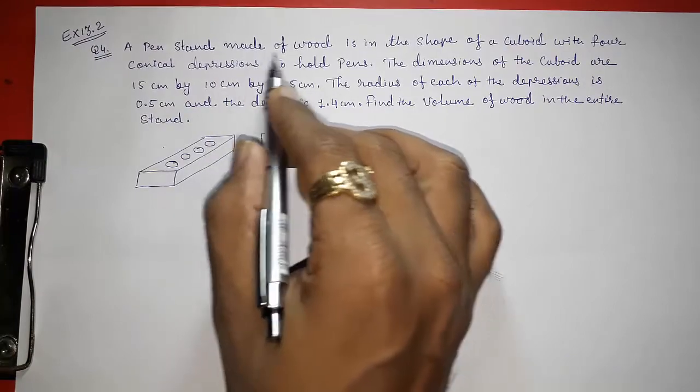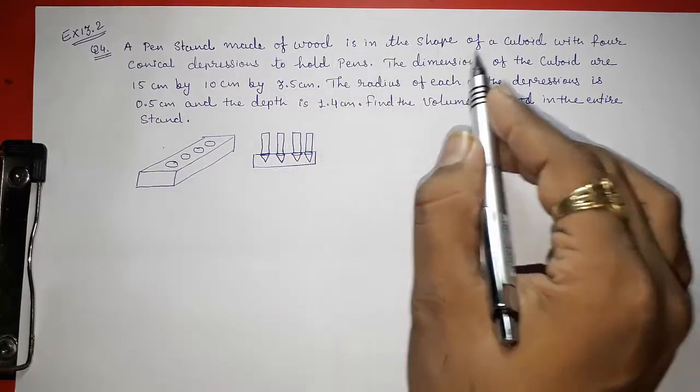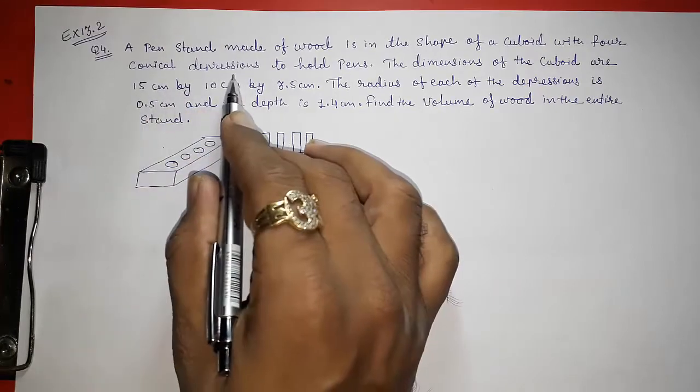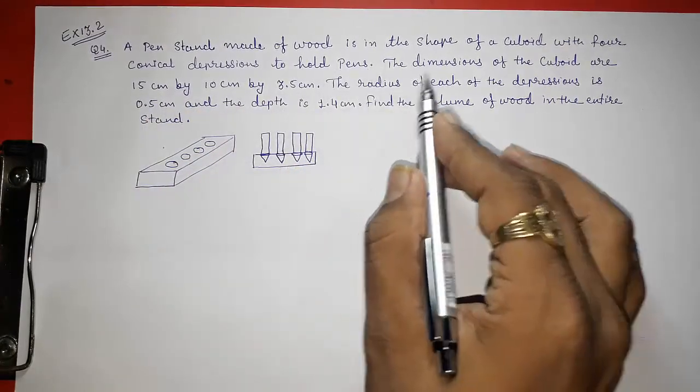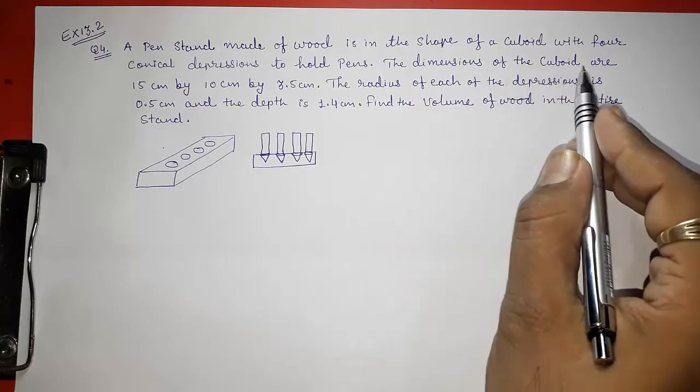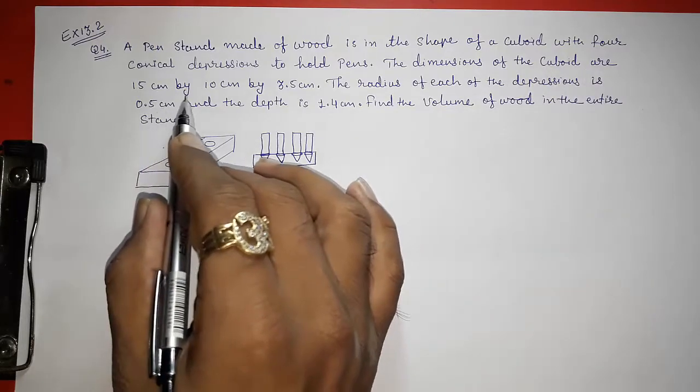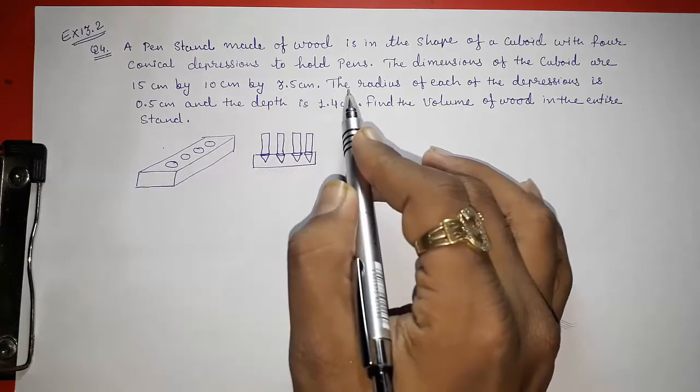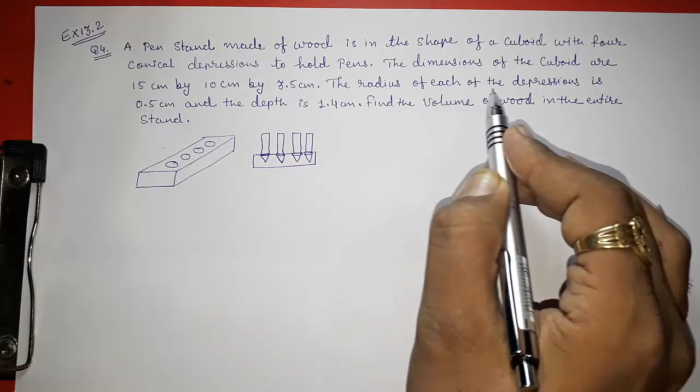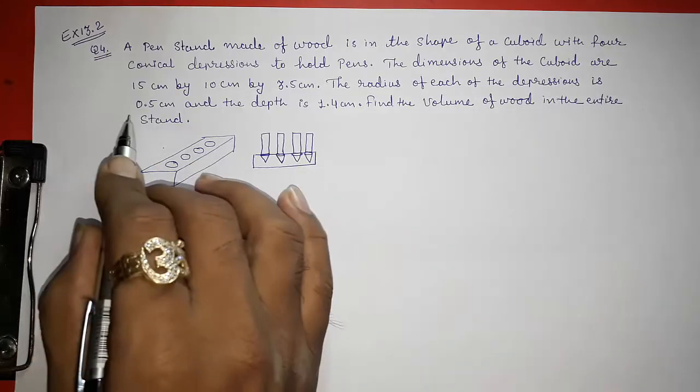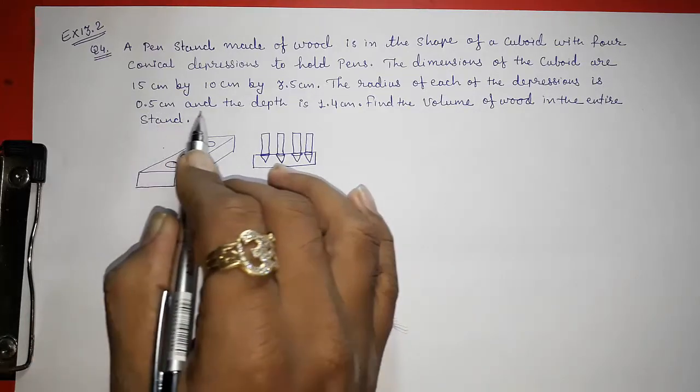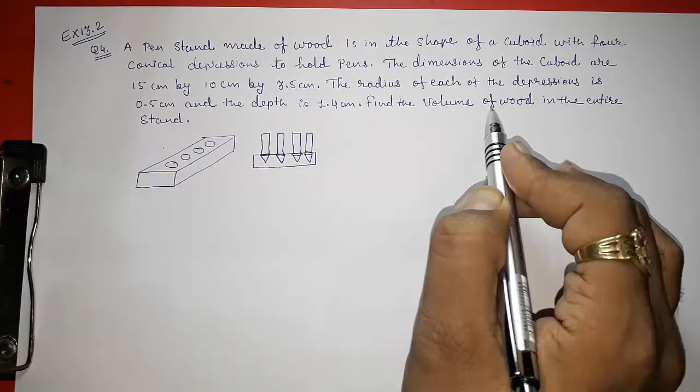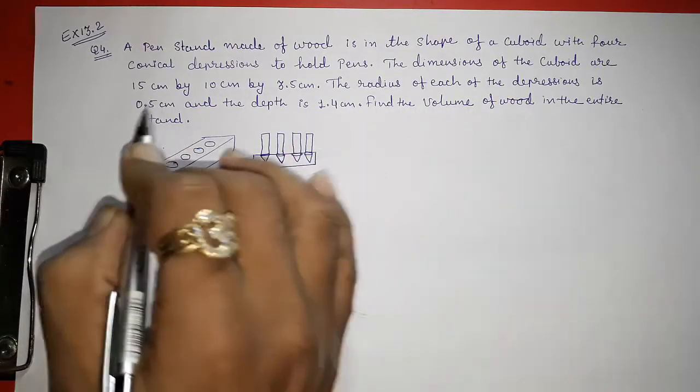A pen stand made of wood is in the shape of a cuboid with 4 conical depressions to hold pens. The dimensions of the cuboid are 15 cm by 10 cm by 3.5 cm. The radius of each of the depressions is 0.5 cm and the depth is 1.4 cm. Find the volume of the wood in the entire stand.